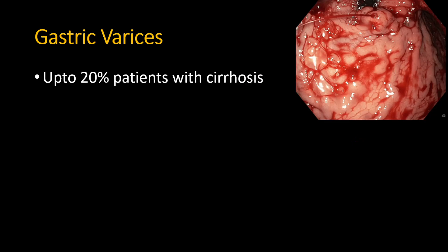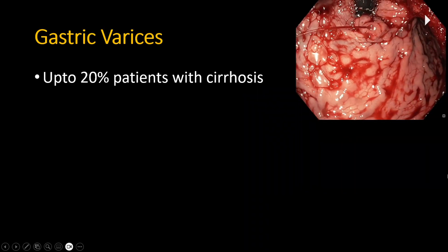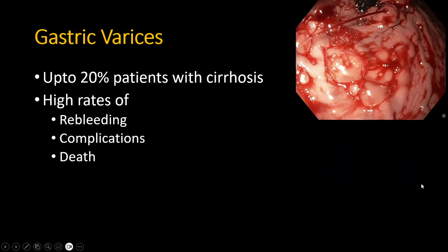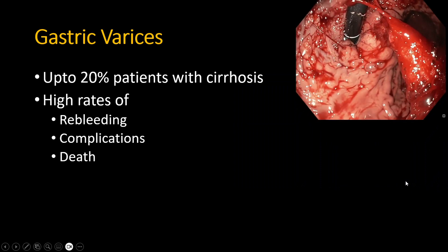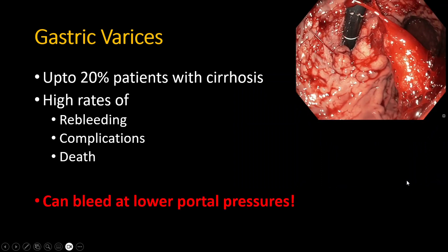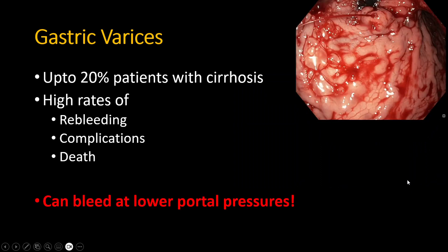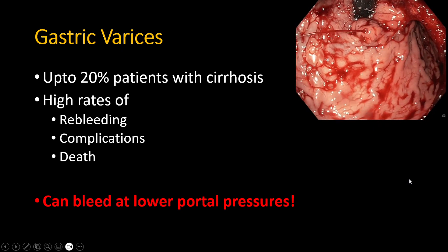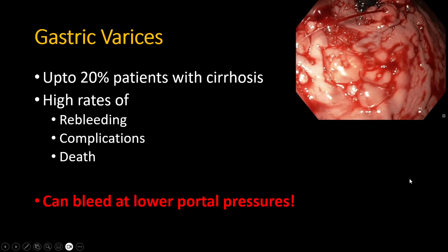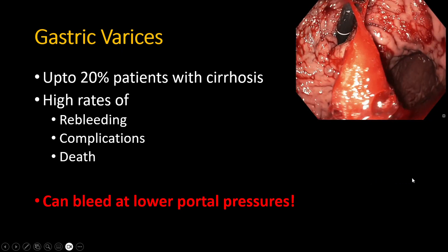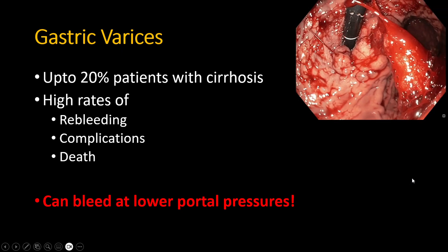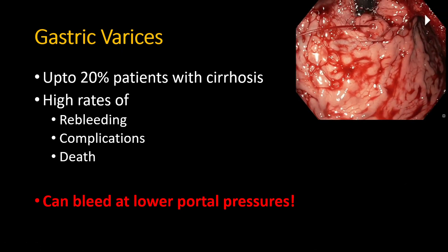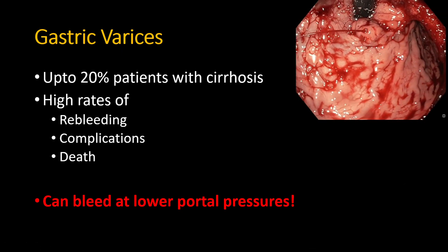Gastric varices can be seen in about a fifth of patients with cirrhosis and are associated with high rates of complications. More importantly, they can bleed at lower portal pressures, so when they do bleed they become candidates for emergency care, and even when not bleeding they may require intervention.